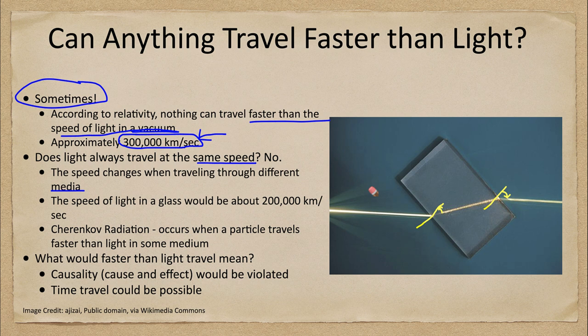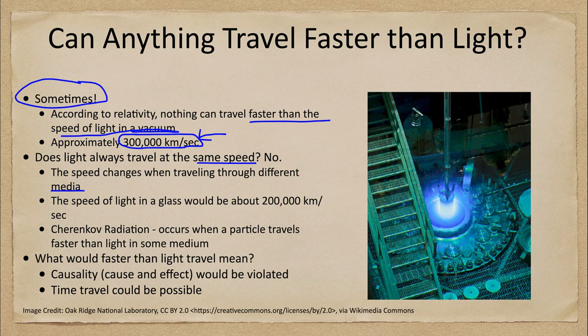This means that a particle could travel faster than light within, say, glass. A particle could travel at 250,000 kilometers per second, while light in a vacuum is 300,000 — so it's not violating relativity by doing that, because it's not traveling faster than the speed of light in a vacuum. However, it is traveling faster than light in that medium.